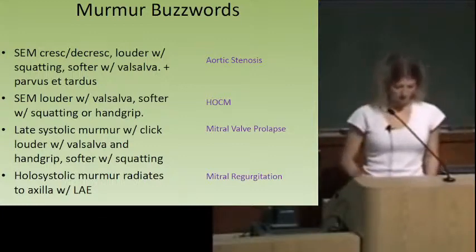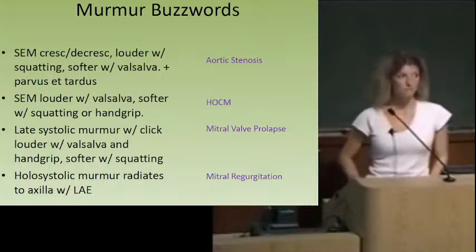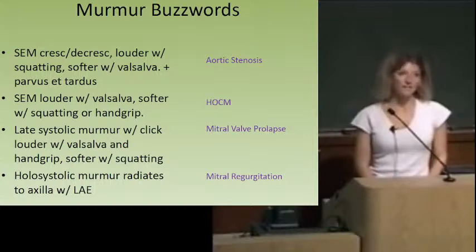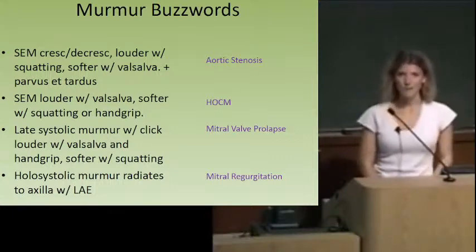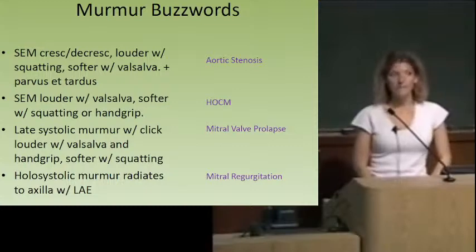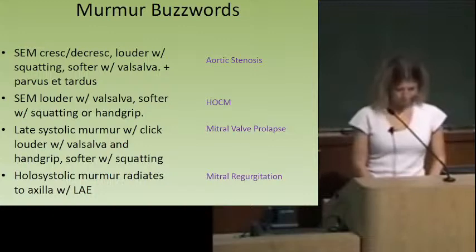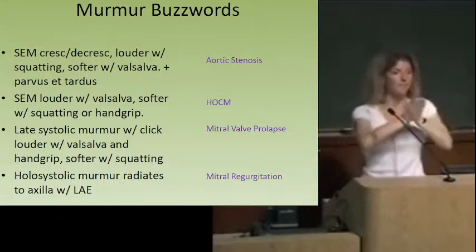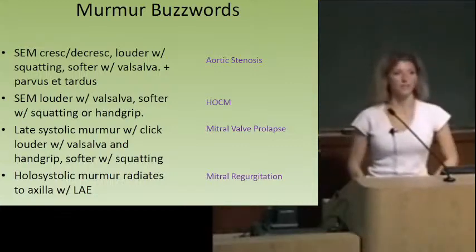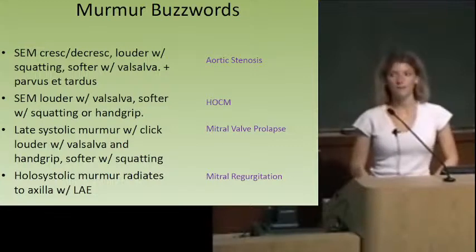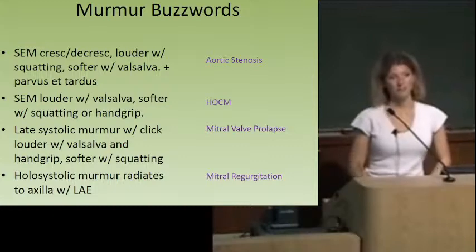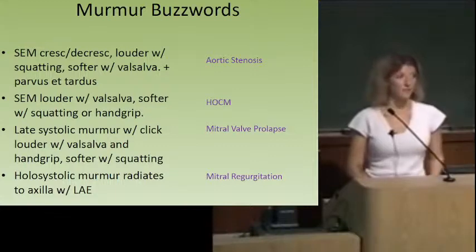Some things that cause aortic stenosis: calcific degeneration in the elderly, or a congenitally bicuspid aortic valve predisposing someone to get it younger. How do we treat it? Valve replacement is the standard of treatment. You would only do balloon valvuloplasty to stabilize the patient so you could get them somewhere to perform the operation.